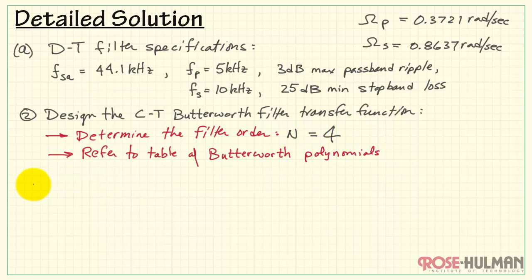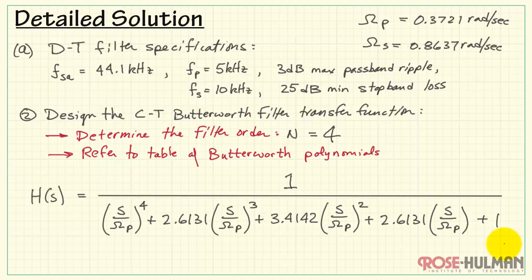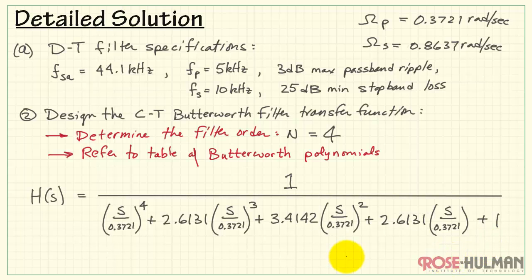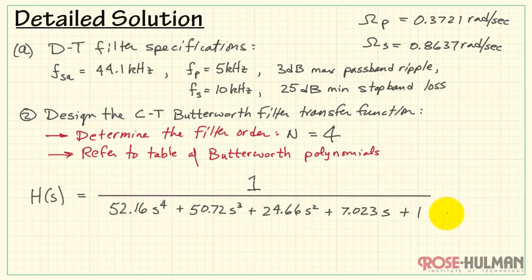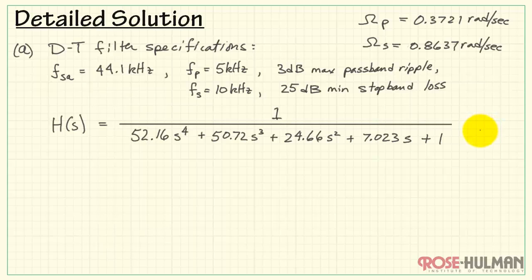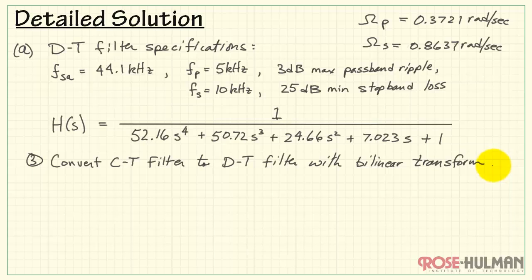Now we refer to a table of Butterworth polynomials. For 4th order, H(S) has a standard form. I'll substitute capital Omega_p based on what we calculated earlier, then simplify the denominator to show a single coefficient in front of each power of S. Now we have an appropriately designed transfer function in the continuous-time domain.